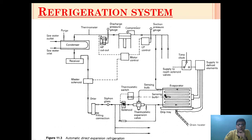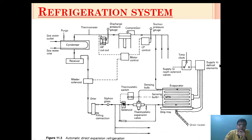As the refrigerant flows in the evaporator, it will extract the heat, making the surrounding temperature of that area get cooled. As it gets cooled, the refrigerant boils off, converting from low pressure liquid refrigerant to gas form. A defrost element is also provided so that from time to time the evaporator coil can be defrosted, to prevent unwanted accumulation of ice over the surface so that a good amount of heat transfer can always take place.